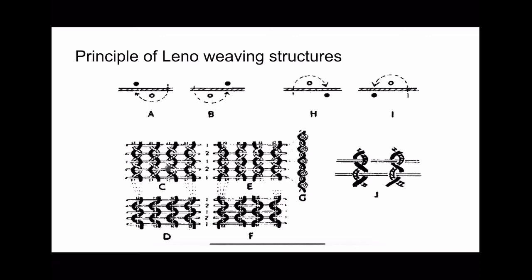Although a single warp beam can be used, in some cases the difference in take-up is so significant that it is necessary for the two series of ends to be fed from separate beams — a separate warp beam for the standard ends and a separate warp beam for the crossing ends.